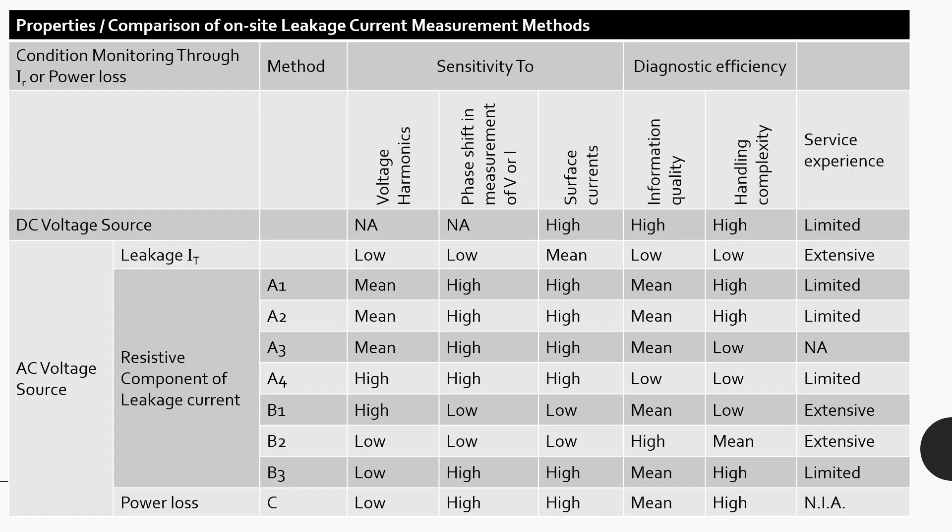IEC 60099-5 describes several methods for condition monitoring through leakage current or power loss. Those methods are evaluated on different parameters and based on user requirements a suitable method can be decided.